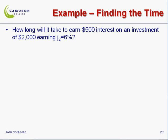This question asks how long it's going to take to earn $500 interest on an investment of $2,000 earning 6% compounded semi-annually. That's what j2 means, compounded twice a year every six months.